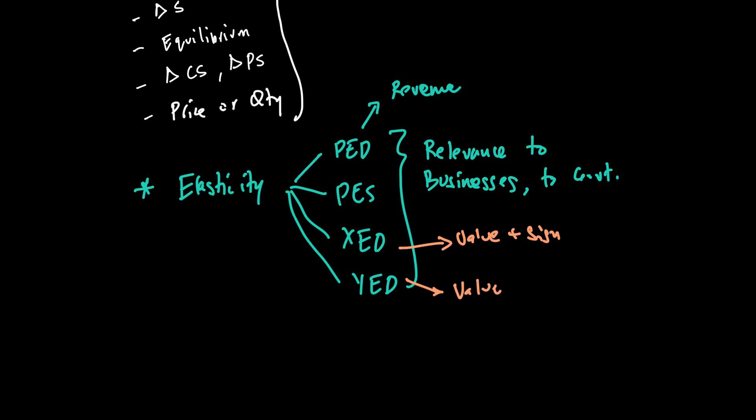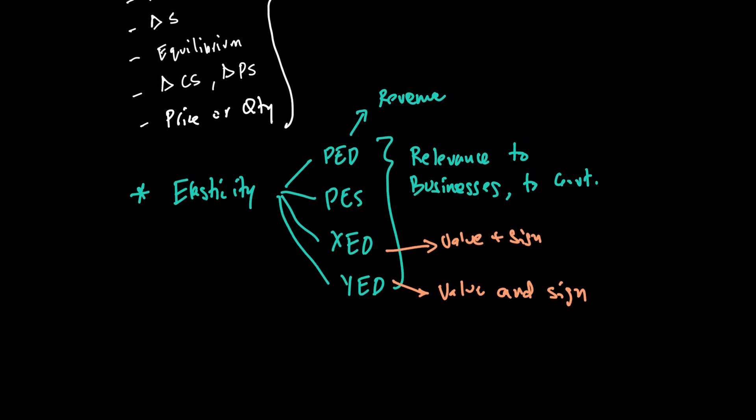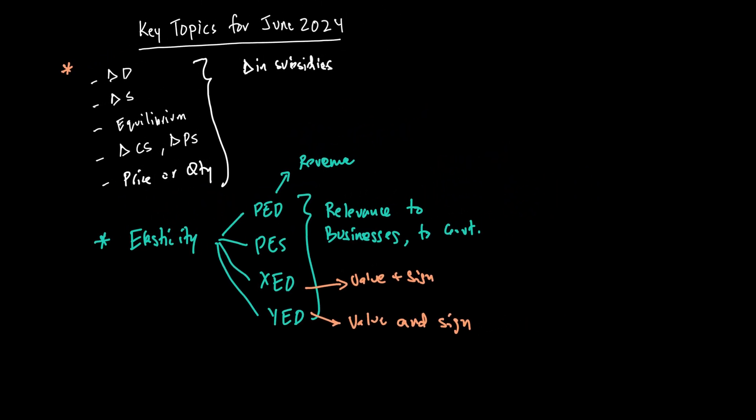You also need to know the PED and revenue relationship because that's an important thing to understand. Also, for XED you need to know the significance of the value and sign, and similarly for YED the significance of the value and sign. Please prepare this topic really well — it is tested every single year in the last three papers. You need to prepare for both equilibrium and elasticity in order to make sure you are in a safe space when it comes to your exam.